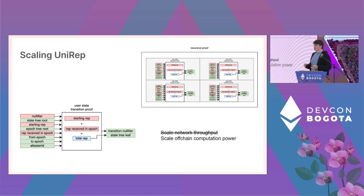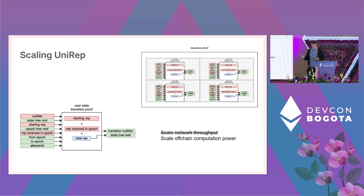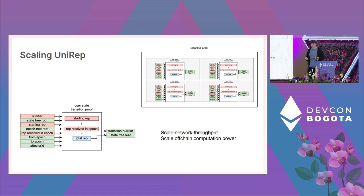Recursive proving is really important because it shifts the approach from scaling the throughput of a decentralized network to scaling off-chain computational power — which we're much more able to do. Intel and AMD improve this every year, and we can build ASICs to make proofs quickly. If we bundle 10 proofs at a time we get a 10x improvement, 100 proofs a 100x improvement, and so on. This does introduce complexity around proof aggregators, but it's a solid approach.